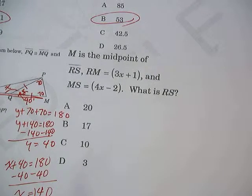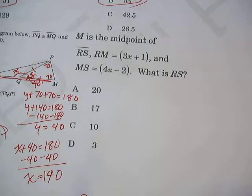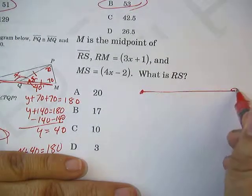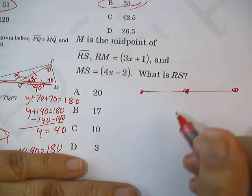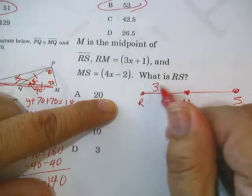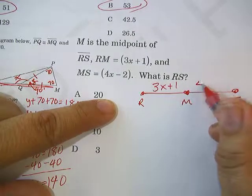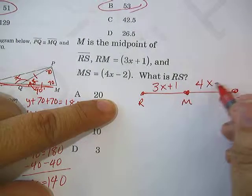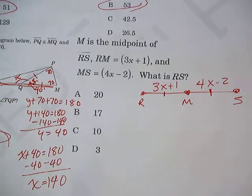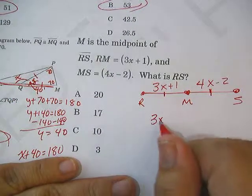Last problem on page 4. M is the midpoint of RS. So let me draw that. M is in the middle. R and S. They tell me RM is 3X plus 1. They tell me MS is 4X minus 2. Well, if this is the midpoint, both pieces have to be equal. So you go ahead and set up an equation.